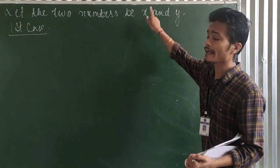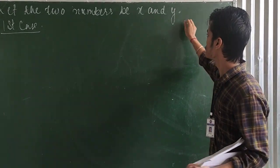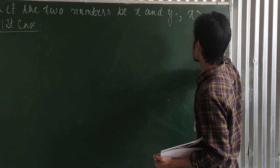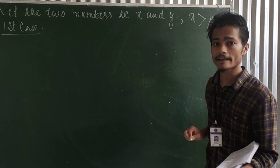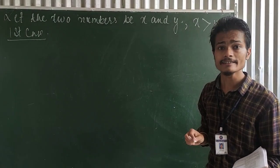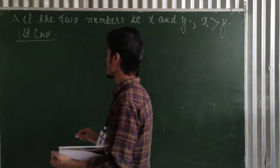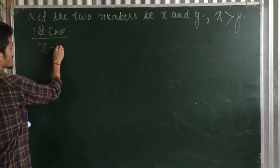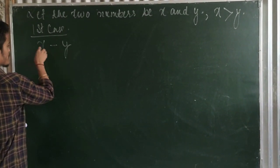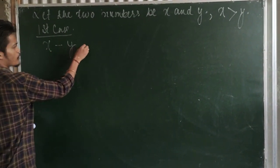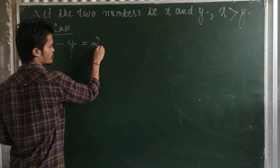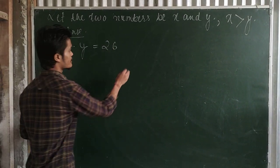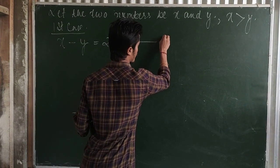Let x be greater. So we note that x is greater than y. Therefore, x minus y equals 26. That is equation 1.